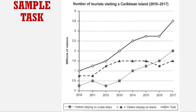With this task we've got three lines and eight time periods, which means we actually have 24 pieces of data. You cannot cover 24 pieces of data and finish your task on time — you only have about 20 minutes. Since there's a lot of data, we have to zoom out a bit and work on the most important pieces of data. For my overall summary, I'm going to mention that all three lines are increasing.